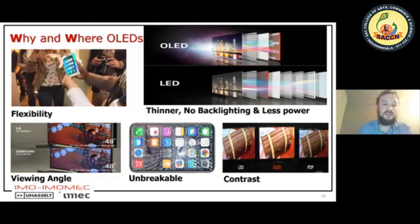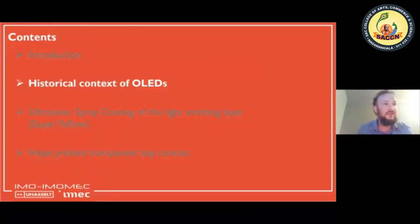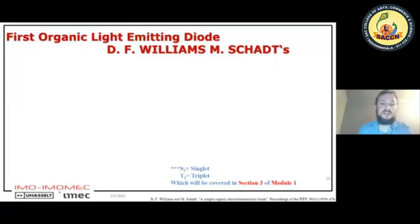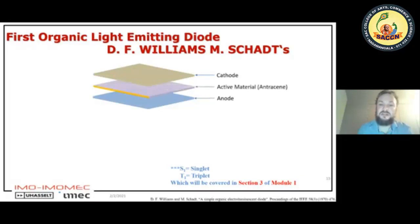These are the applications we're working towards, but it started with investigation on the material side and the combination of different layers and materials. The first organic light emitting device by Williams and Schott in 1970 was the simplest thing you could think about: just an anode, a cathode, and an active material in between. This active material was anthracene — the first material used to generate light.